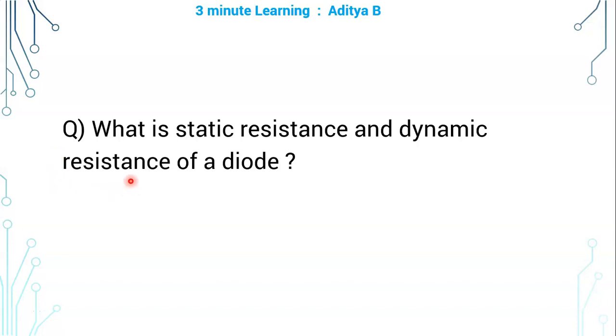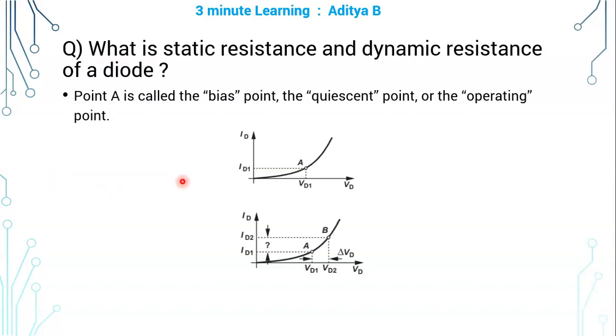What is static resistance and dynamic resistance of a diode? In the IV characteristics of a PN junction diode, in the first quadrant...